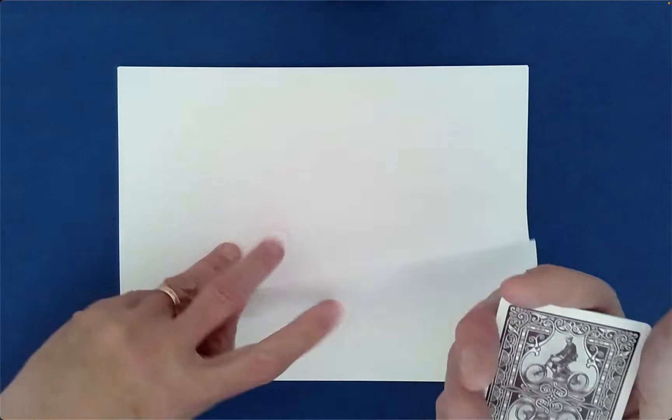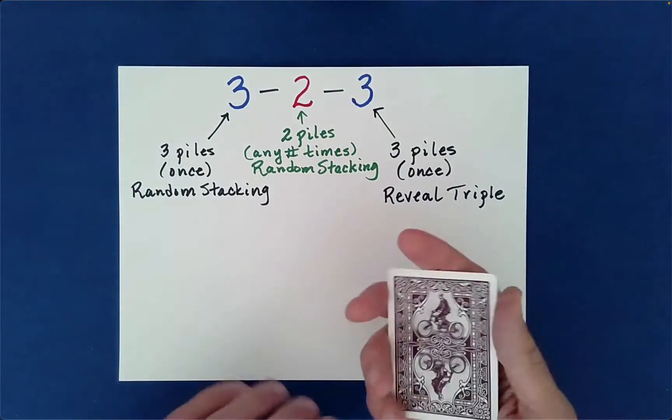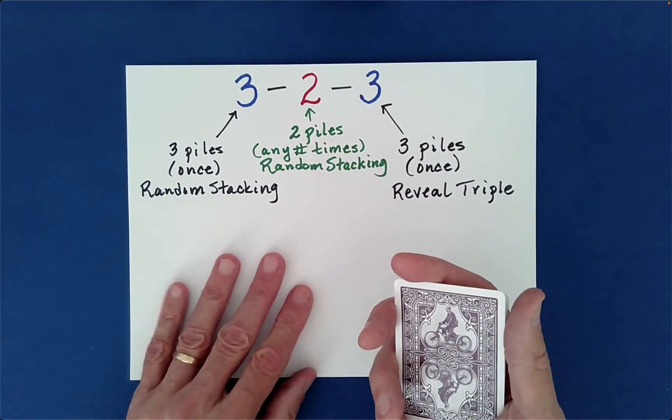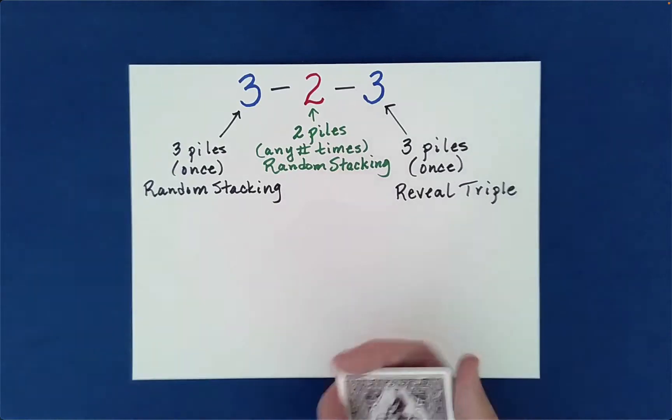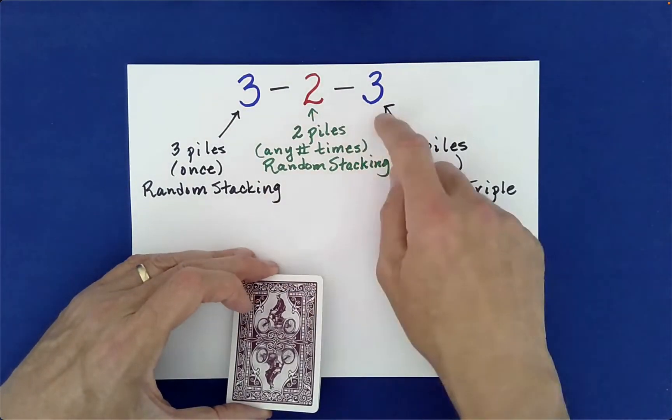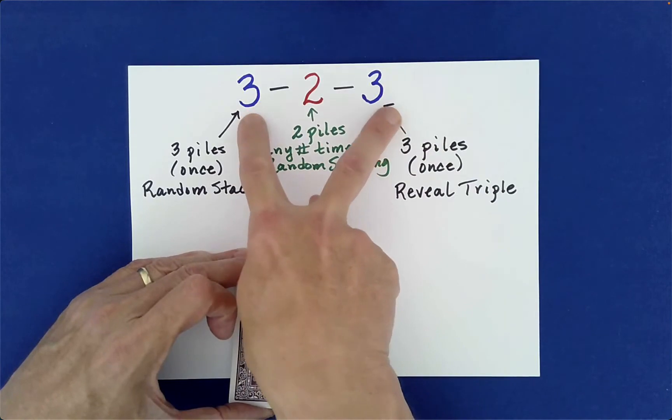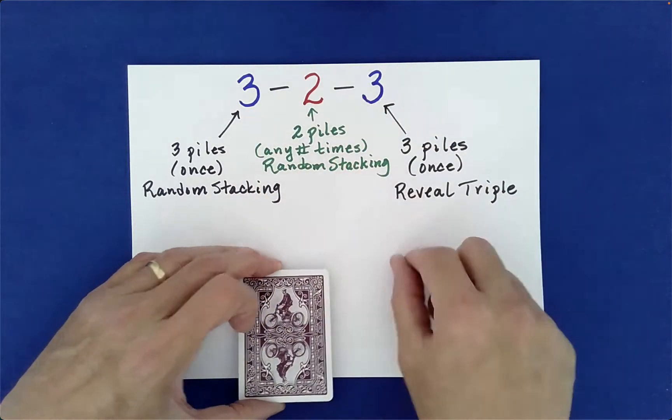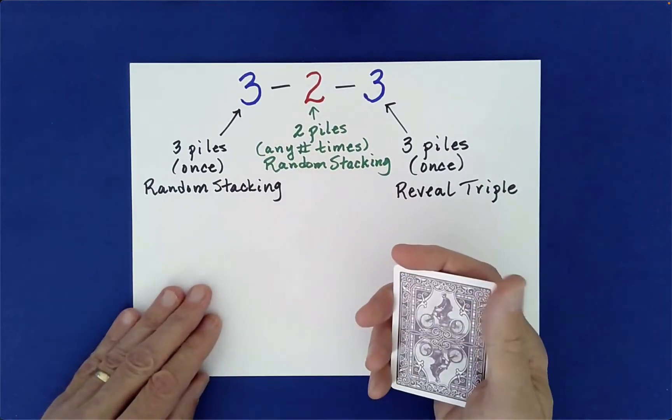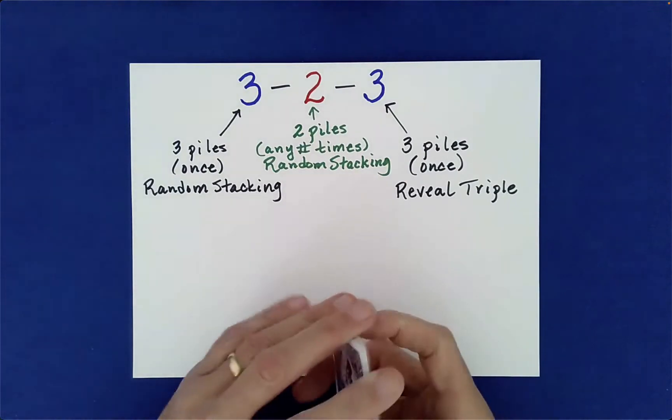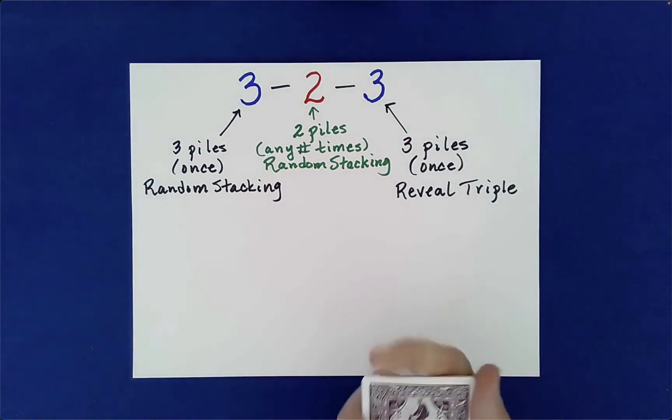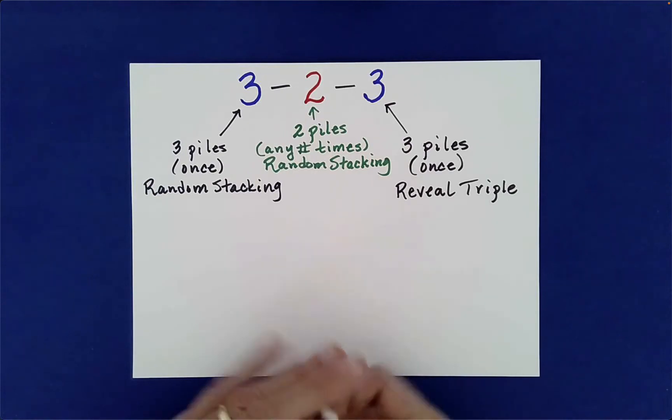What you need to remember is just the number 3-2-3. It's fairly easy to remember because of the symmetry here. So three, two in the middle, and then another three. Well, how does this help us? It gives you the key for how you need to deal the piles and stay safe.